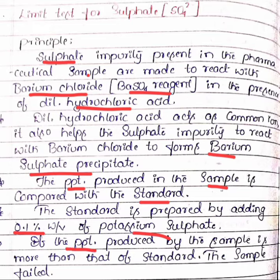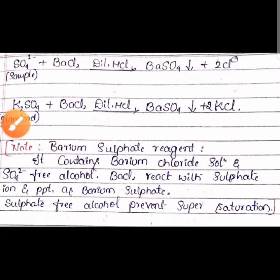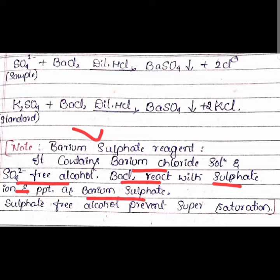If the precipitate produced by the sample is more than that of the standard, the sample fails the test. The barium sulfate reagent contains barium chloride solution and sulfate-free alcohol. Barium chloride reacts with sulfate ions and precipitates as barium sulfate.